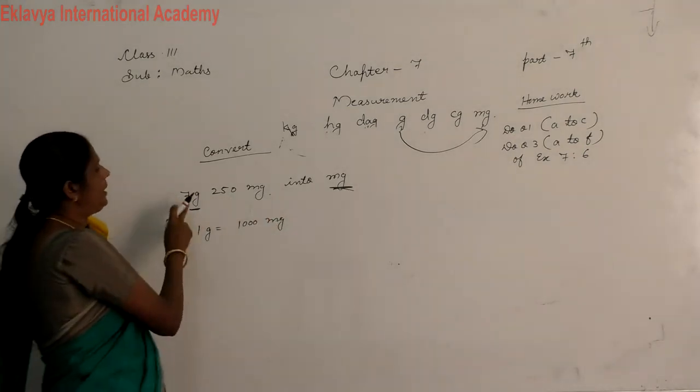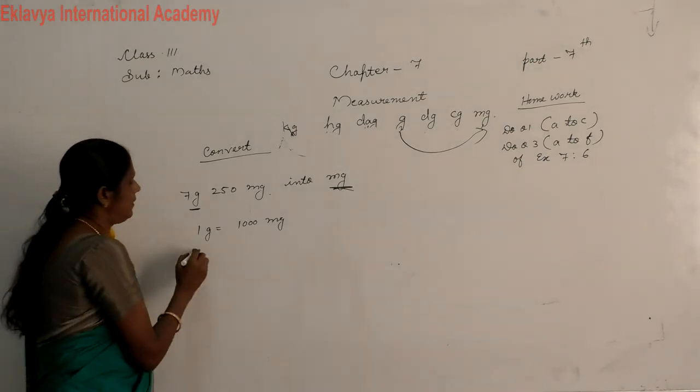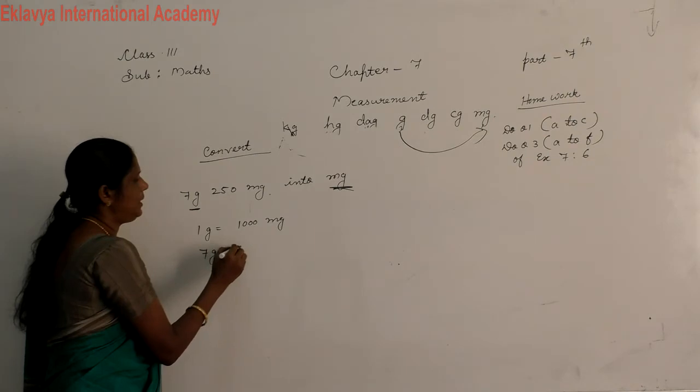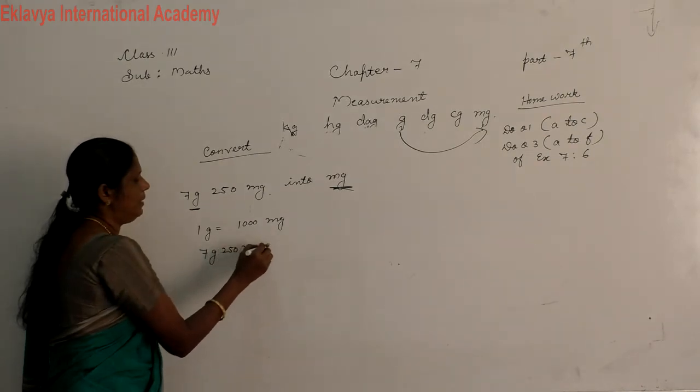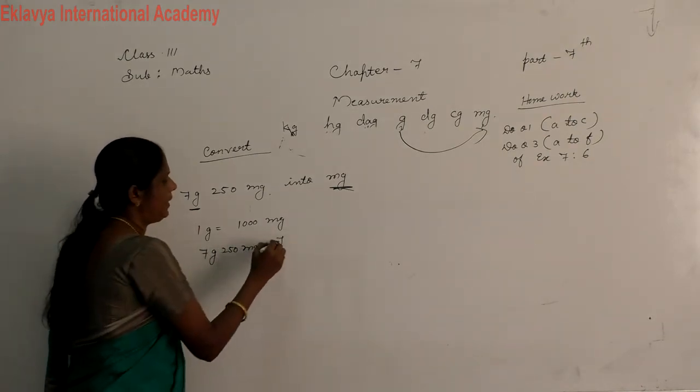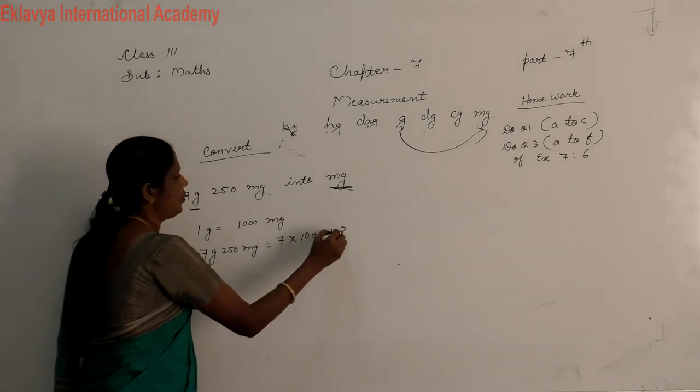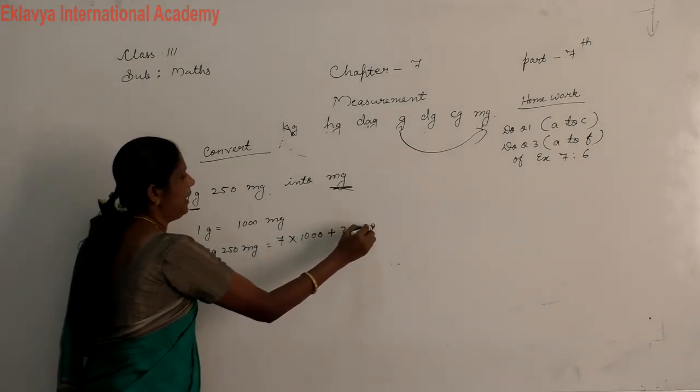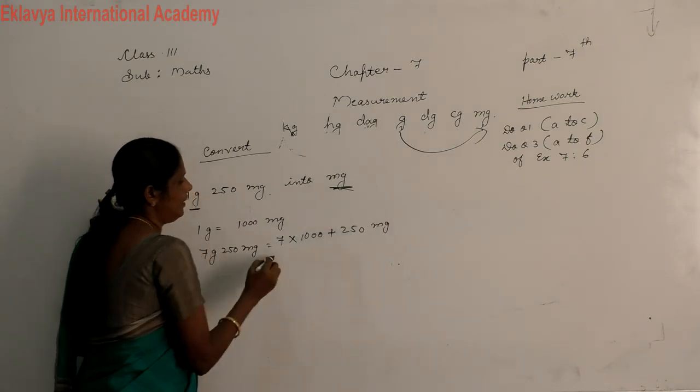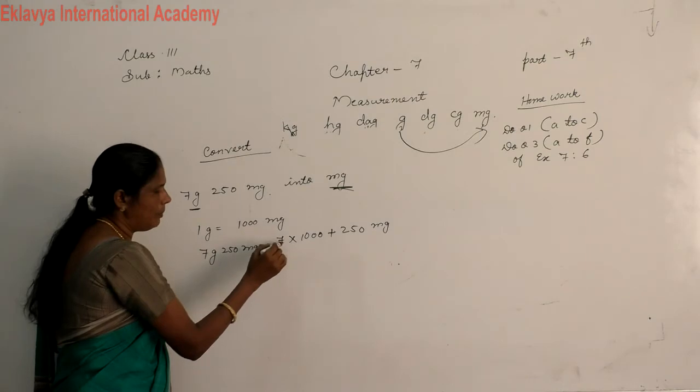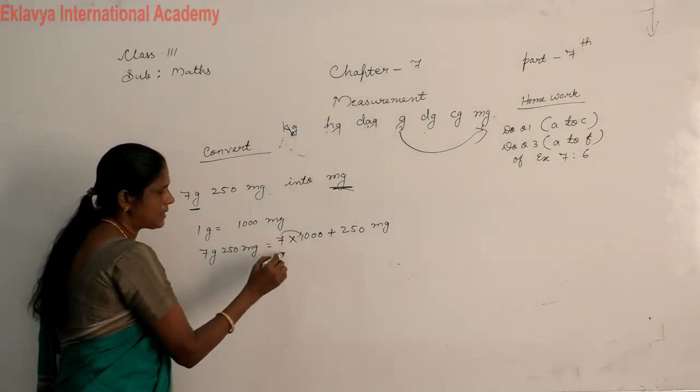Then, how many grams we have? 7 gram, 250 mg is equal to 7 multiply 1000 plus 250 mg. Now, you multiply by 1000 mg. Only you multiply the number. 7, 1, 7.